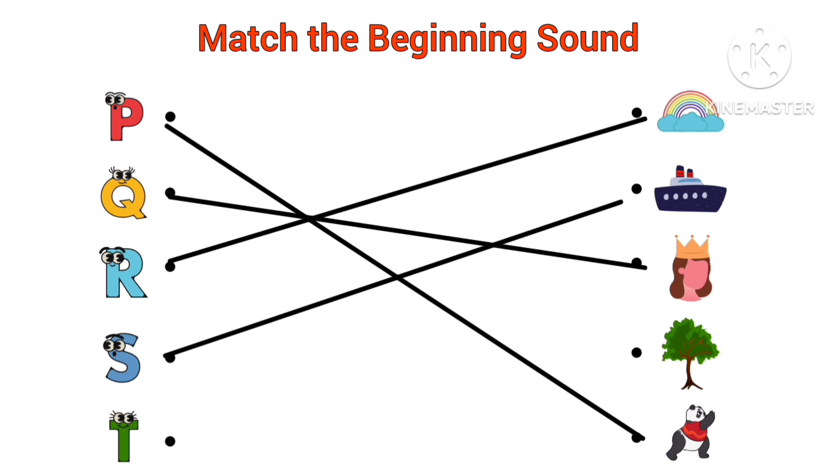S, S for ship. Beginning sound of ship is S. T, T for tree. Beginning sound of tree is T.